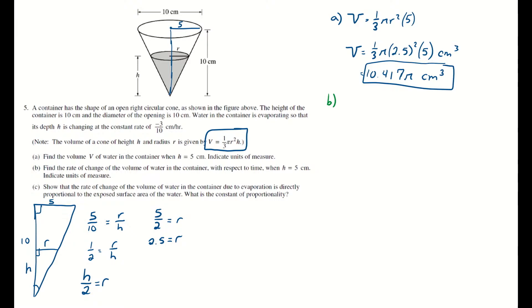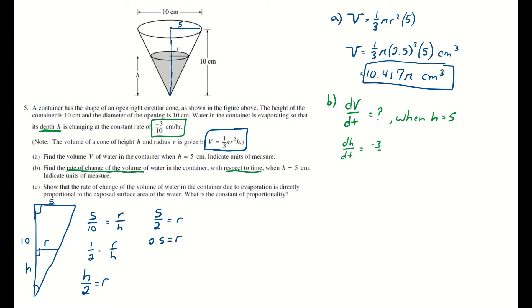What about Part B? Part B says: find the rate of change of the volume of water in the container with respect to time when h is 5 centimeters — indicate units of measure. When you see 'rate of change of volume with respect to time,' you should immediately think dV/dt. You're trying to find that when H equals 5. And you remember you're given another rate of change: the depth h is changing at negative 3 tenths, so dH/dt equals negative 3 tenths.